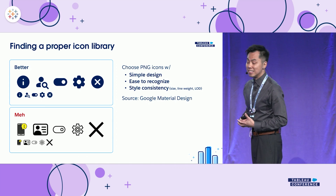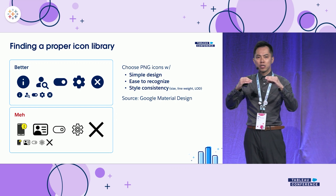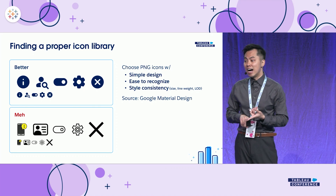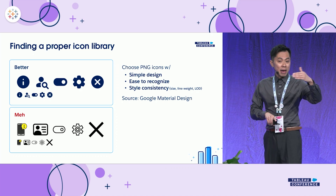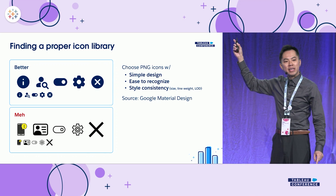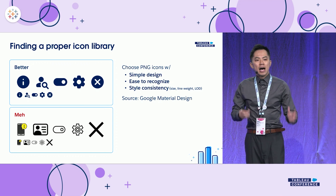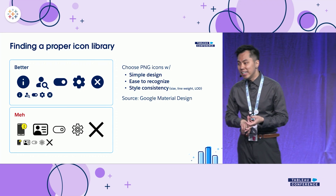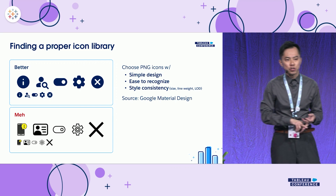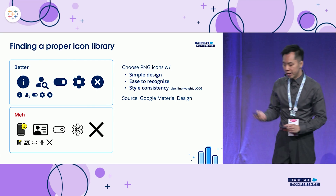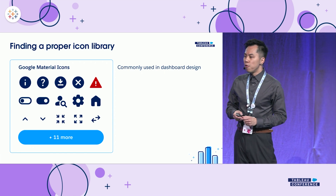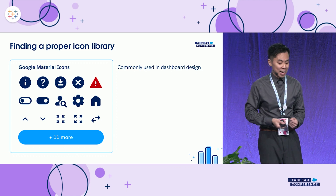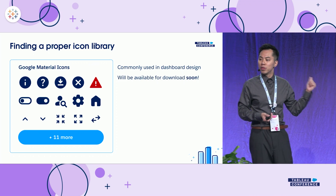According to Google Material Design, icons used in software — or in our case, a dashboard — should be simple in design and easily recognizable, meaning even from far away you can figure out what they mean without text next to them. Amongst the icons, they should have style consistency: similar colors, similar line weight and thickness — they should look like they belong in the same family. I've gathered about 26 icons that I deemed commonly usable in dashboard designs, and by the end of the session you'll get all 26 of them.